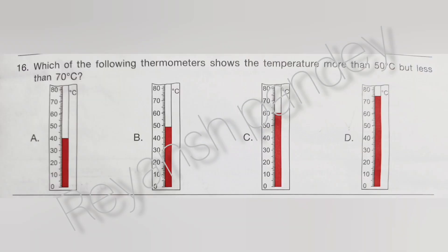Which of the following thermometers shows a temperature more than 50 degrees but less than 70 degrees? The answer is C — 60 degrees.